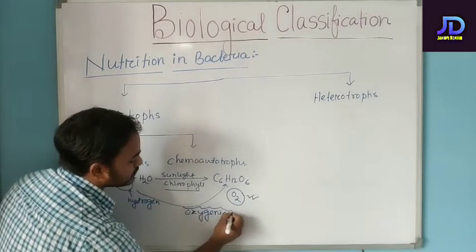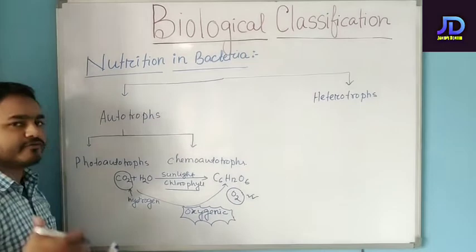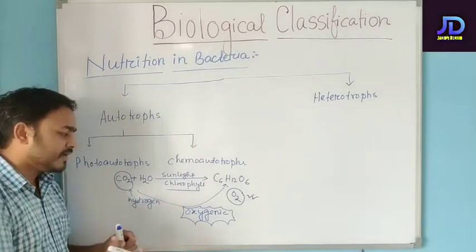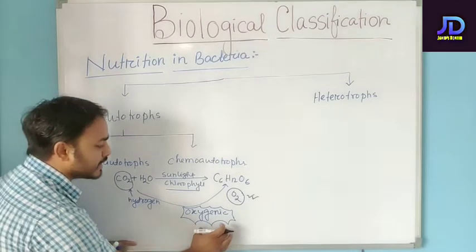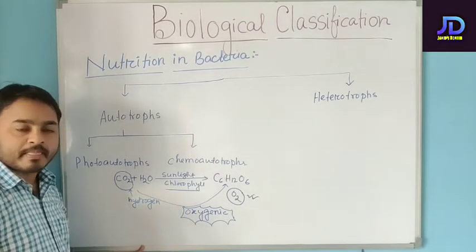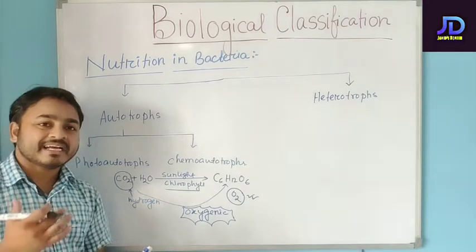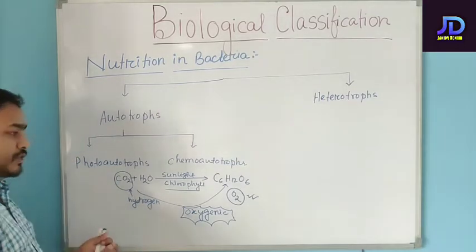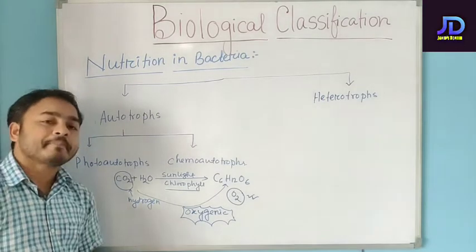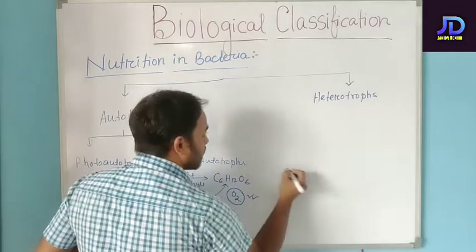This process is called oxygenic because oxygen is evolved. That is why it is called oxygenic. Now in case of bacteria, the same thing happens.